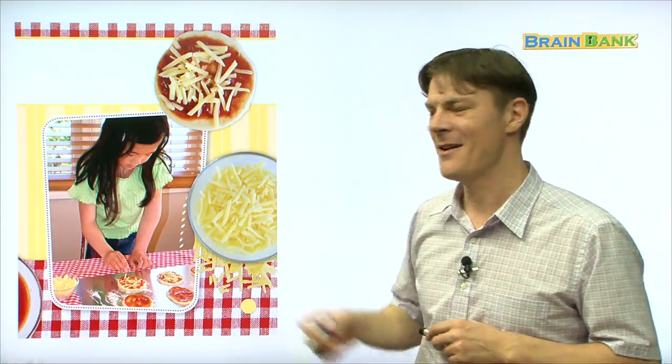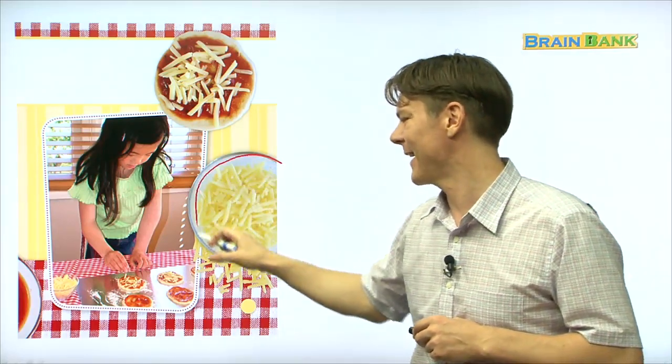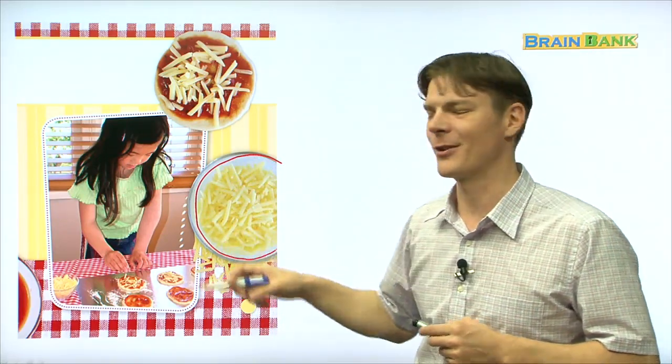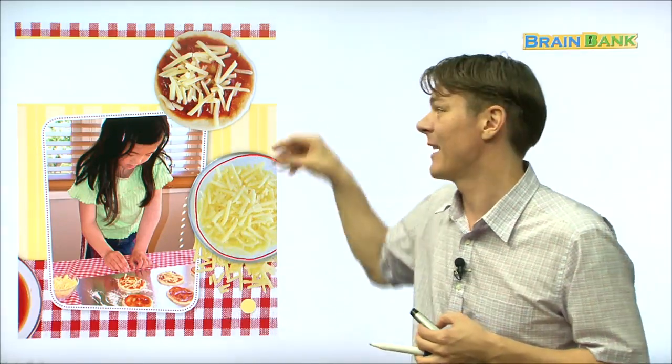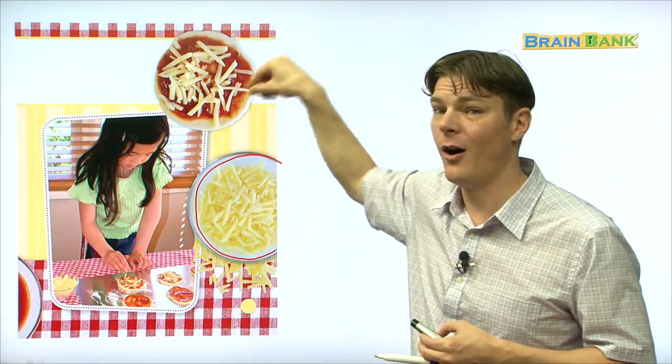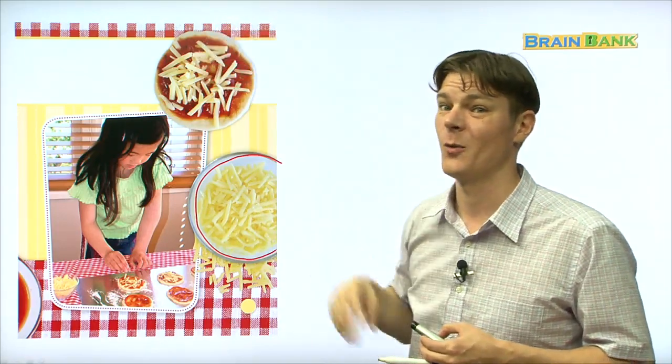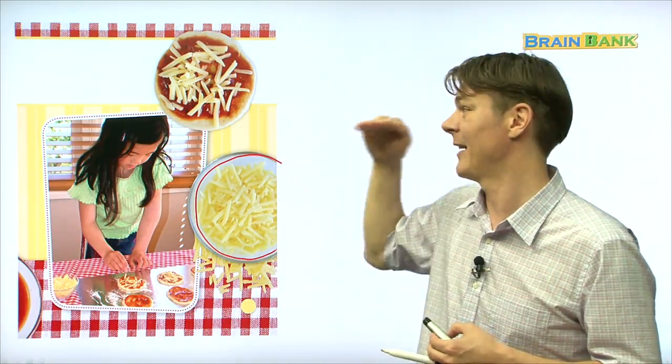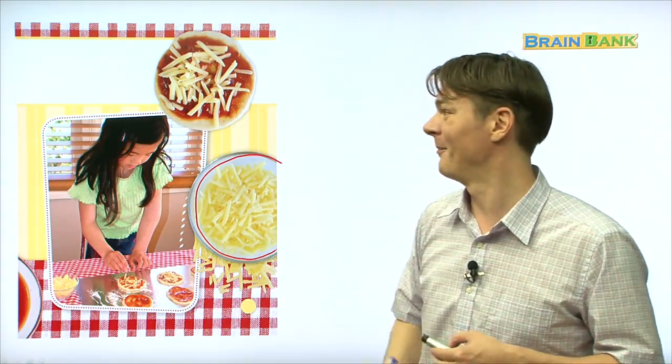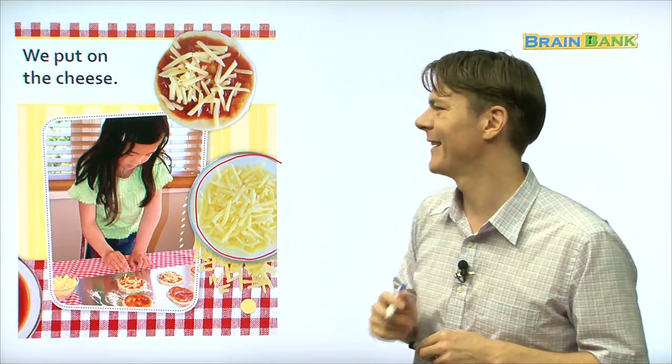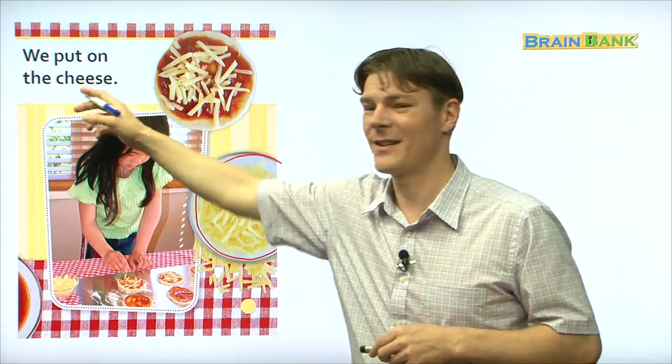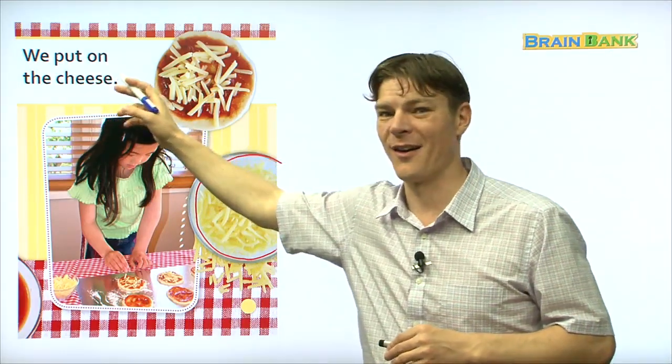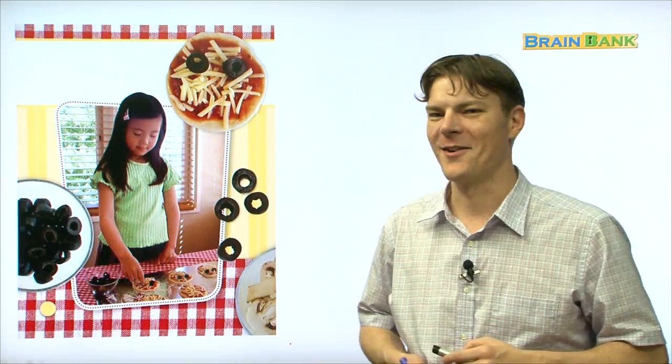Aha. What is this right here, everybody? Cheese. That's right. And the little girl is taking the cheese and she's sprinkling it all over the pizza sauce, which is on top of the dough. So, you have the cheese, then the pizza sauce, and then the dough. Starting to look good. We put on the cheese. Everyone repeat with me. We put on the cheese. Fantastic. Alright.